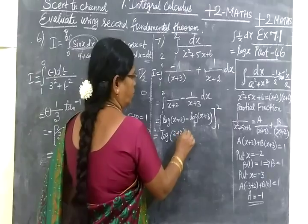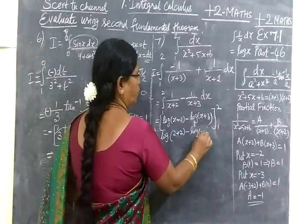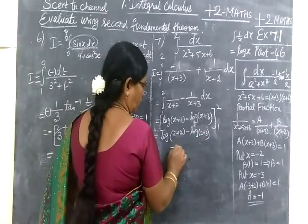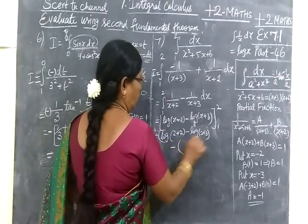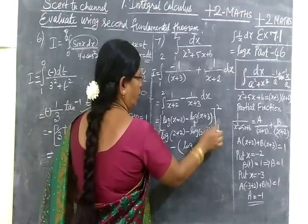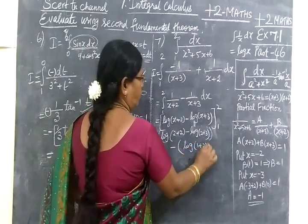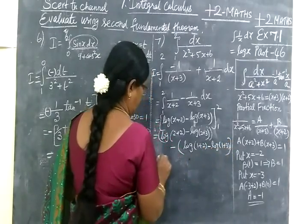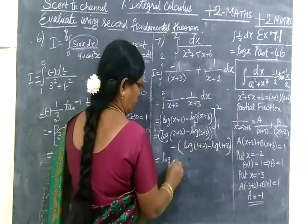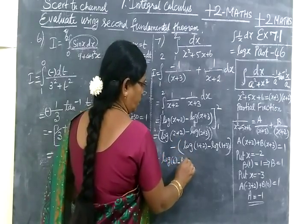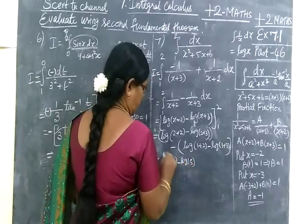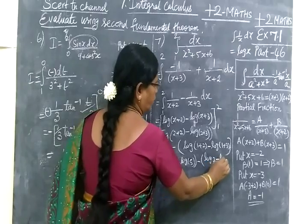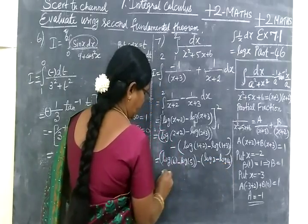So 2 + 2 minus 2 + 3. Upper limit apply the limit, minus is that is total minus. Lower limit, so log of, lower limit in the 1, so 1 + 2 minus log of 1 + 3. So equal to log of what is it? 4 minus 5.